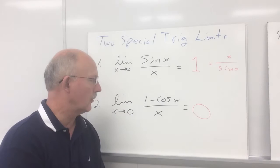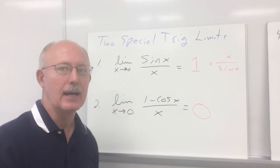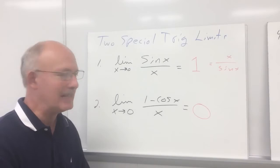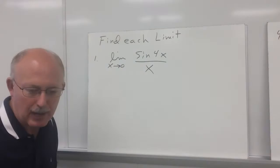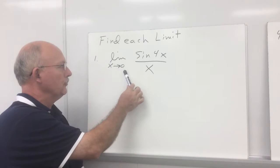Keeping that in mind, let's take a look at several trig problems and see if we can evaluate the limit on a few of these. We're going to start off with the limit as x approaches 0 of sin x over x — well, in this case it's actually sin 4x over x.